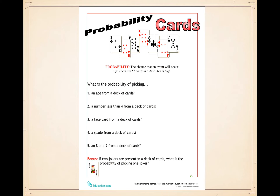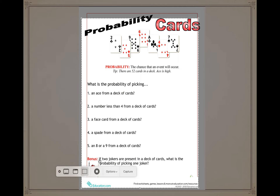Now for homework: use the probability cards sheet — or copy the questions in your notebook if you don't have the sheet. Questions: what is the probability of picking an ace from a deck of cards? A number less than four? A face card? A spade? An eight or nine? Bonus question: if two jokers are present in the deck, what is the probability of picking one joker? I'll send the sheet to the group. Lesson is over — please take care and see you soon!